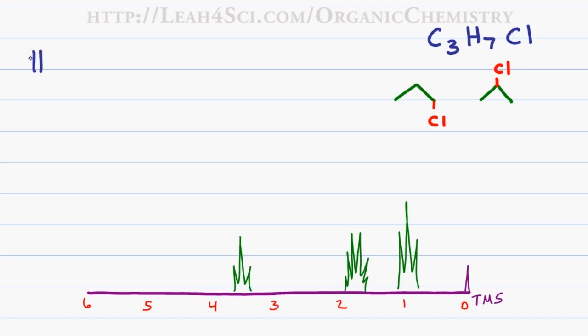The first thing we looked at was the number of hydrogen types within the molecule. Recall that every peak represents one unique type of hydrogen and given that I have three peaks in this graph, I will have three hydrogen types.